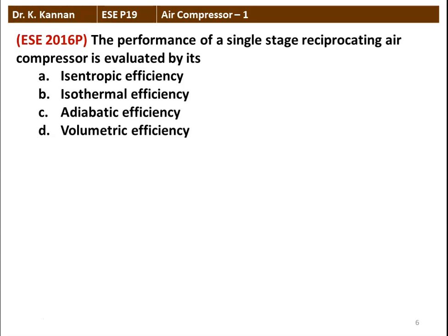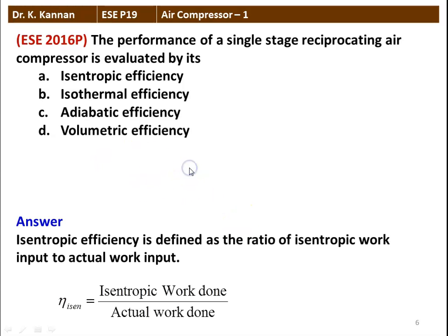The next question, again from the 2016 question paper: The performance of a single-stage reciprocating air compressor is evaluated by isentropic efficiency, isothermal efficiency, adiabatic efficiency, and volumetric efficiency. The performance is estimated by isentropic efficiency, which is the ratio of isentropic work done divided by the actual work done. The correct answer is option A, isentropic efficiency.